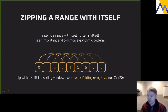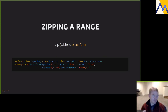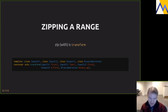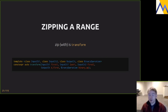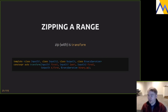Something that annoys me: people say C++ doesn't have zip, but C++ has had zip since C++98 — we call it transform, and it's more general than zip, since zip is essentially transform with make_pair. Because we use transform so often in its unary form, it's easy to forget it has a binary form that can zip two ranges together.